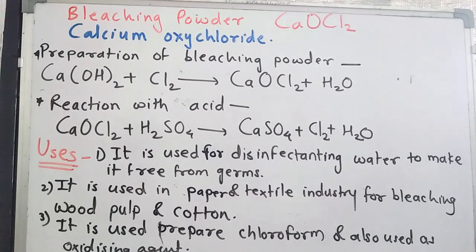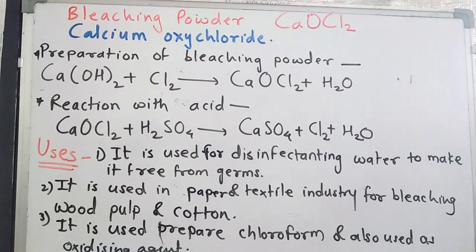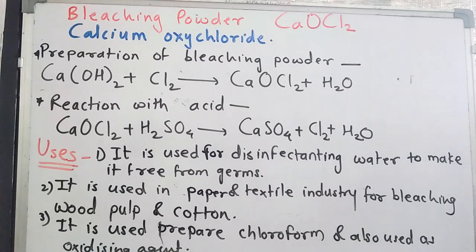Bleaching powder has various uses. It is used as a disinfectant for water to make it germ-free. In the rainy season, the smell of water is due to bleaching powder added to it. Bleaching powder contains chlorine gas; when added to water, it releases Cl2 in small amounts, killing germs. It is also used in swimming pools for the same purpose.